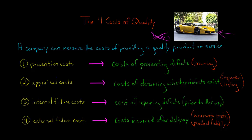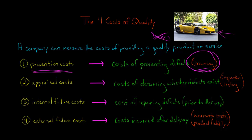We don't have a problem where the brakes are going to fail on this car because the employees in the factory are doing a great job — they've been properly trained. So any cost of training those employees would be considered a prevention cost. That's one cost of ensuring we're going to have a quality product or service.